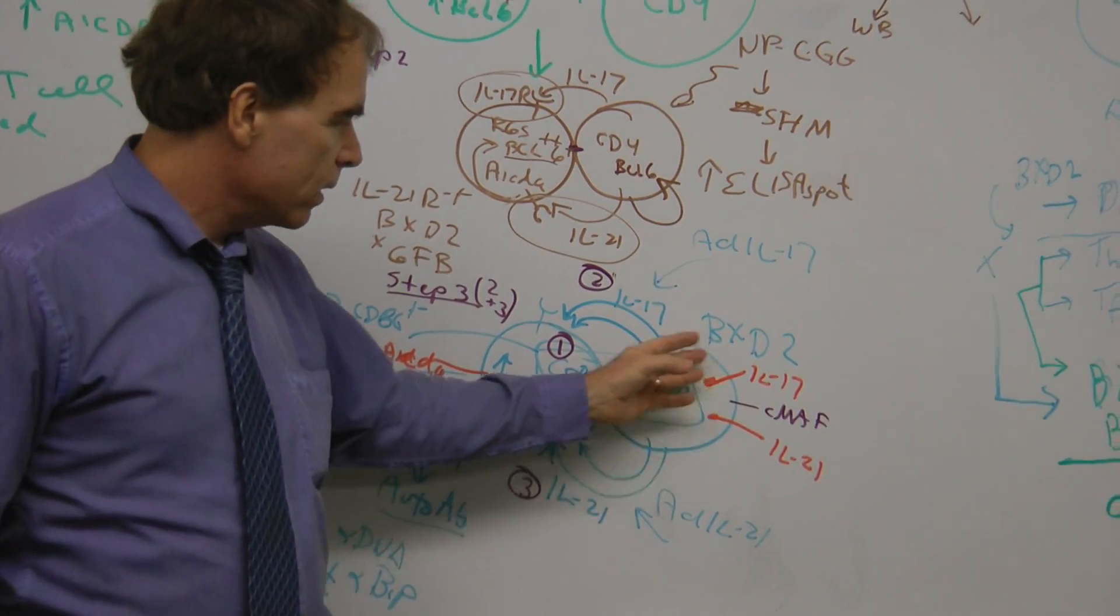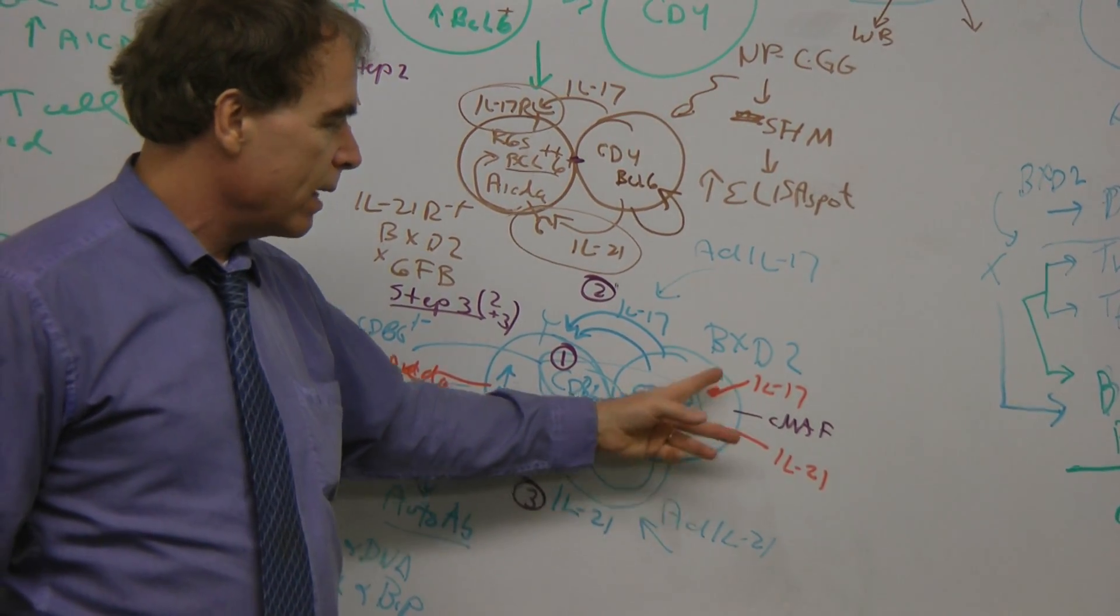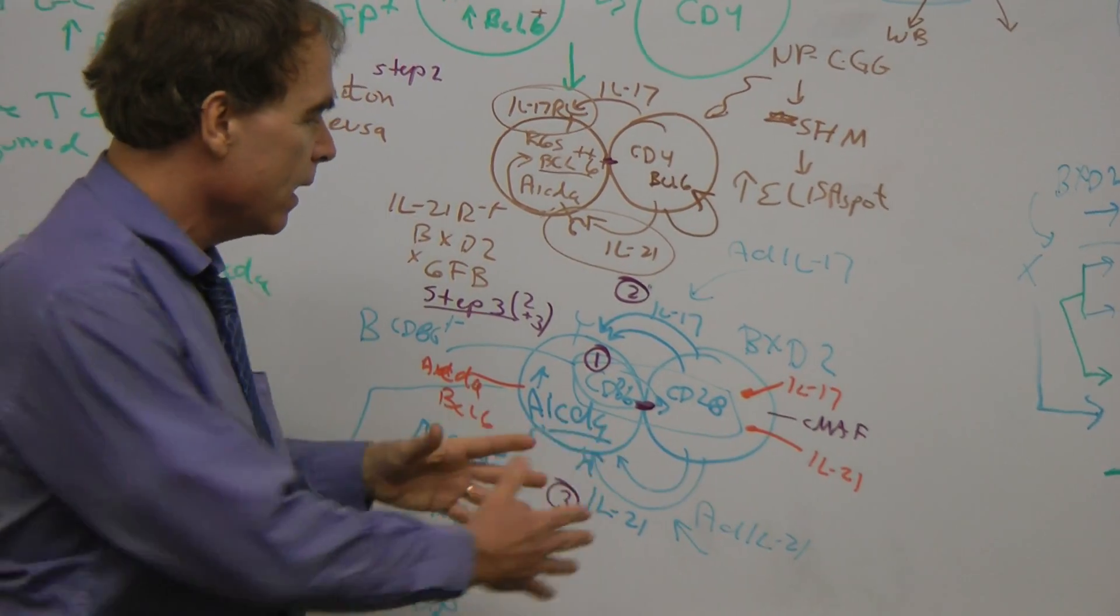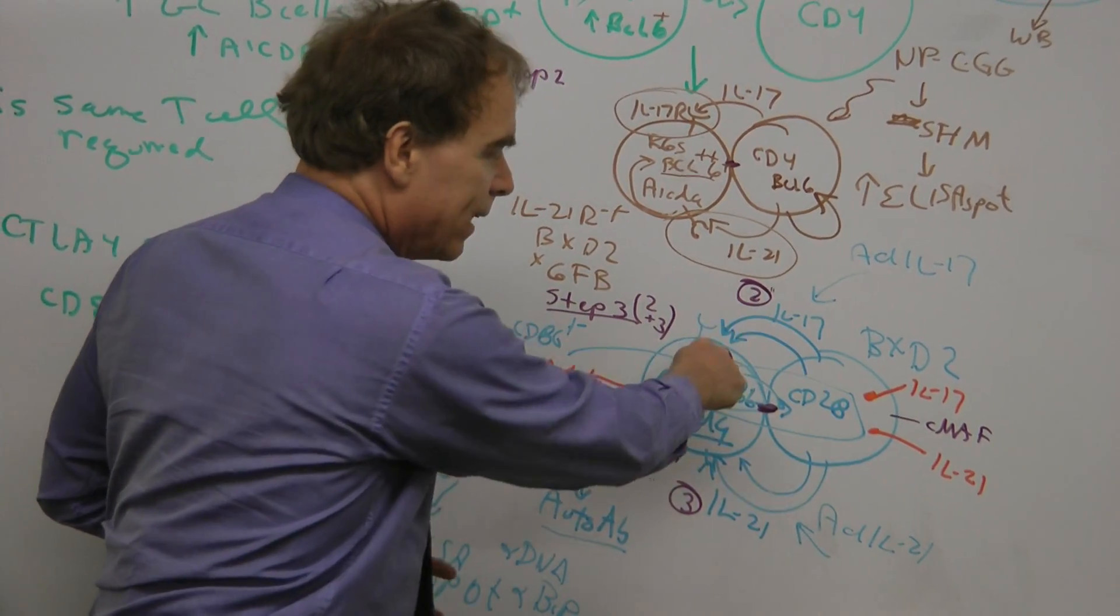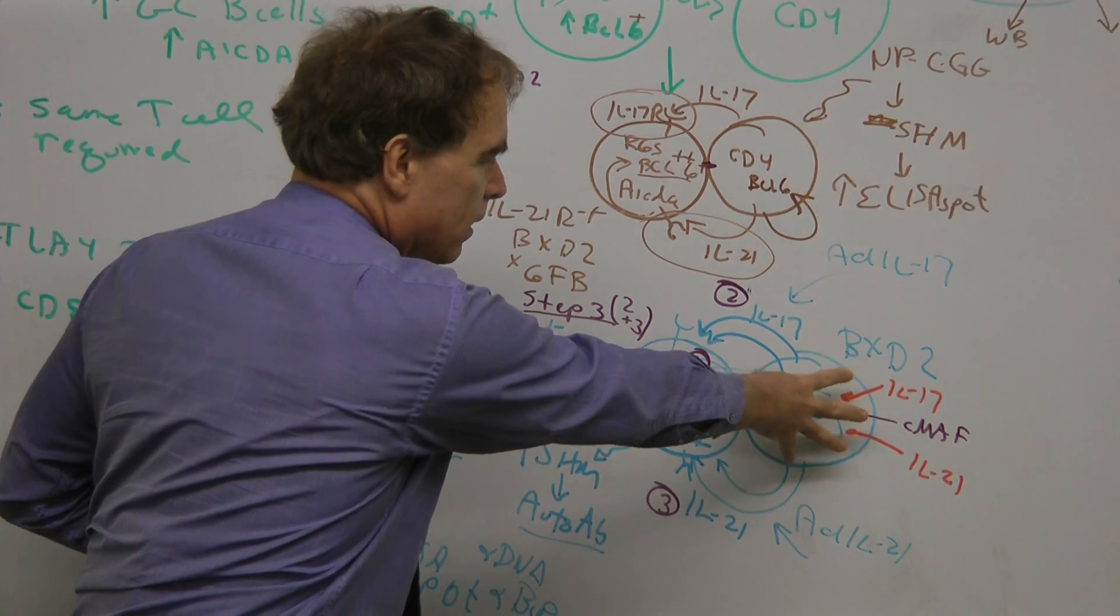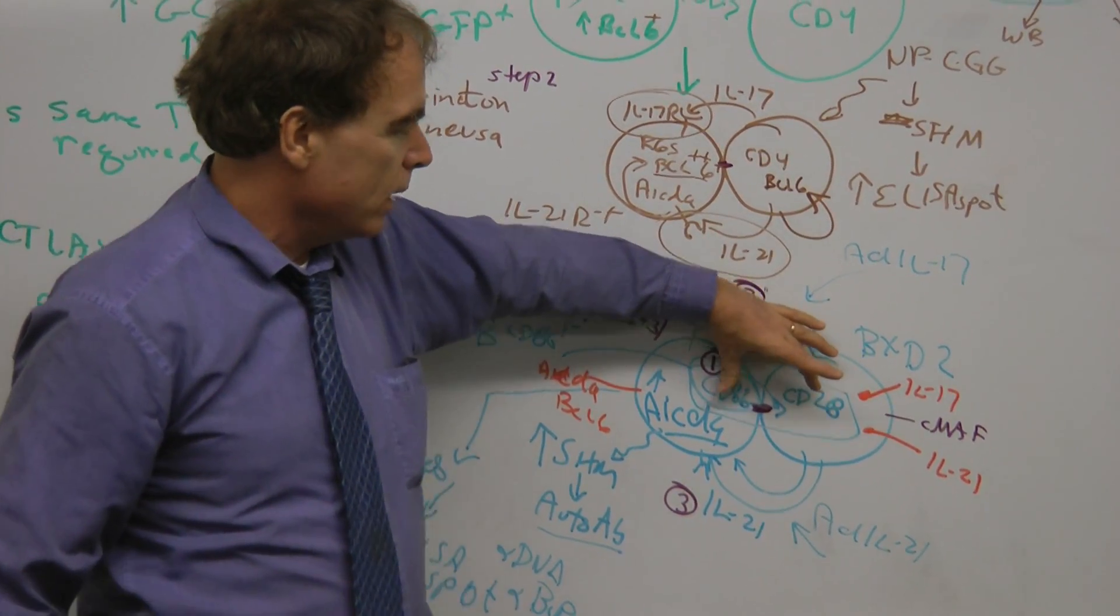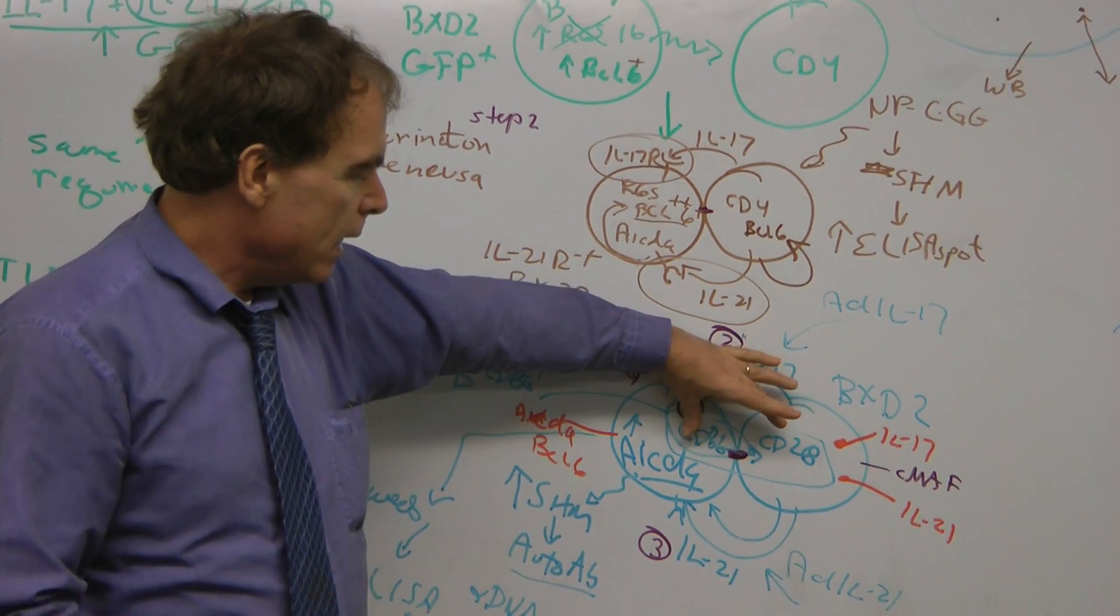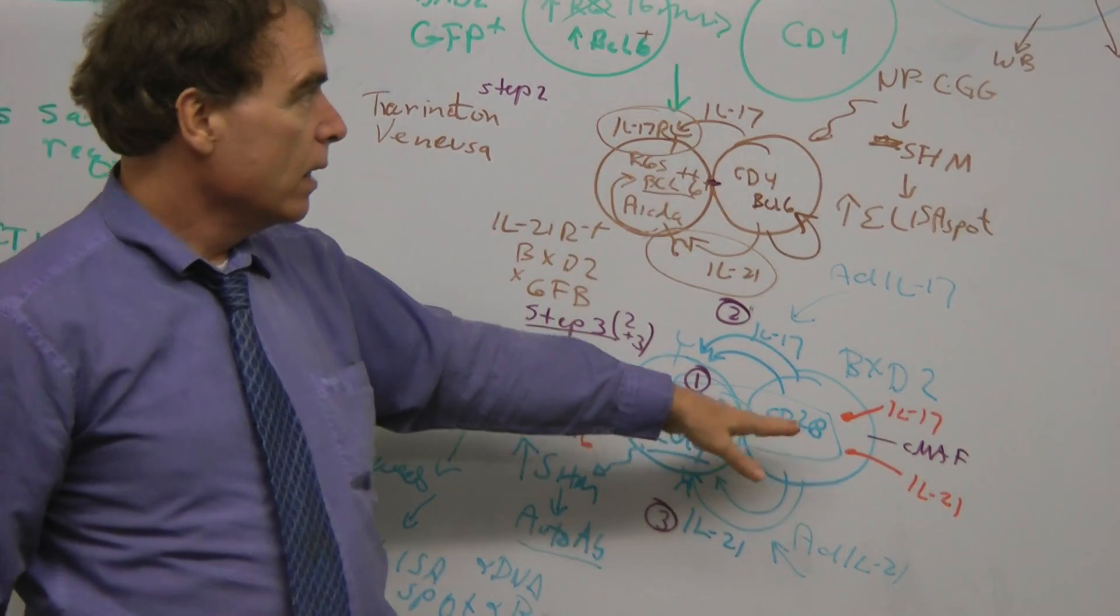Or it could actually promote further development of the T cells to become double producers of IL-17 and IL-21. We don't know exactly whether this affects that, or whether these signals cause differentiation, but we do know that this interaction is important. We also wonder about co-stimulation through ICOS and ICOS-Ligand.